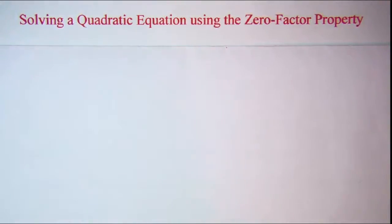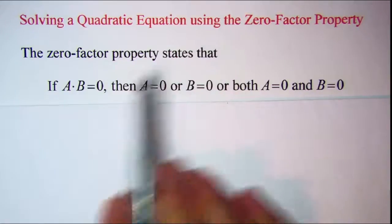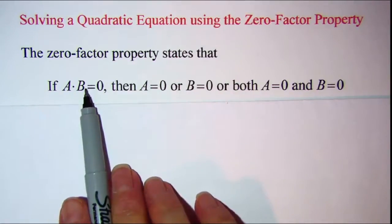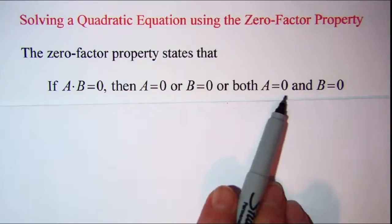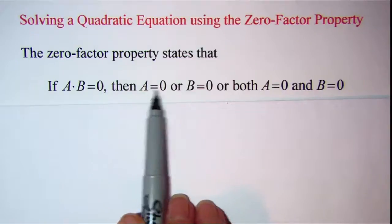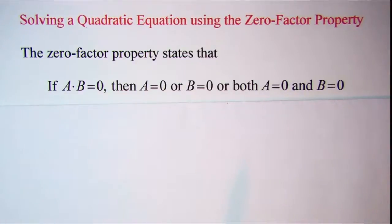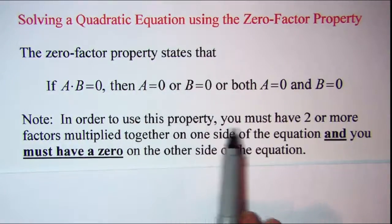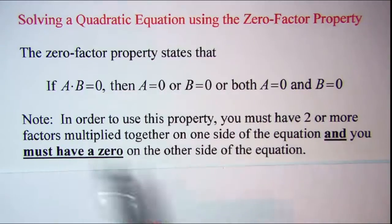In this video we'll be solving a quadratic equation using the zero factor property. The zero factor property states that if you have two numbers multiplied together and the product is zero, then one or the other or both of the numbers are equal to zero. So if a times b equals zero, then a equals zero or b equals zero or both equal zero. Note: in order to use this property you must have two or more factors multiplied together on one side of the equation and you must have a zero on the other side.